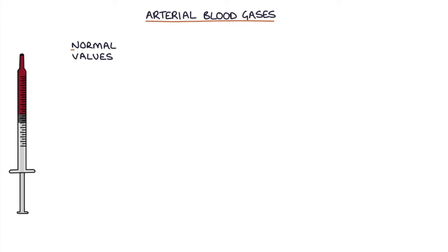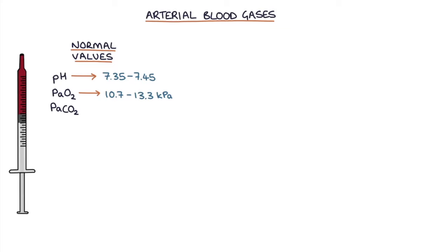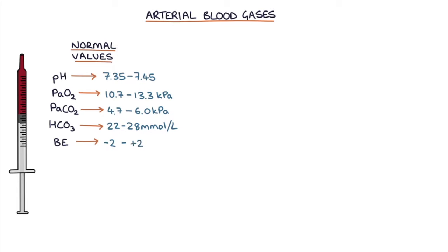Let's go through some basic normal values. The normal pH is 7.35 to 7.45. The normal PaO2, or partial pressure of oxygen dissolved in the blood, is 10.7 to 13.3 kPa. The normal PaCO2, or carbon dioxide in the blood, is 4.7 to 6.0 kPa. The normal bicarbonate (HCO3) is 22 to 28 mmol/L. The normal base excess is −2 to +2, and the normal lactate is 0.5 to 1 mmol/L.